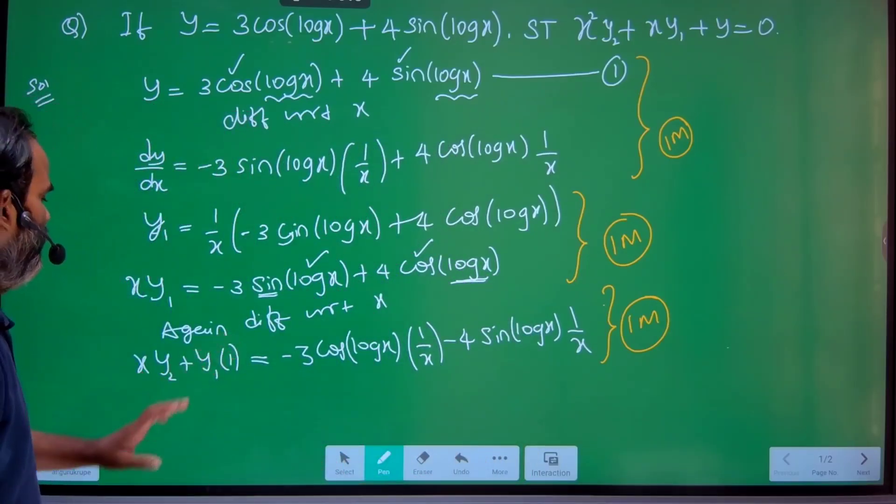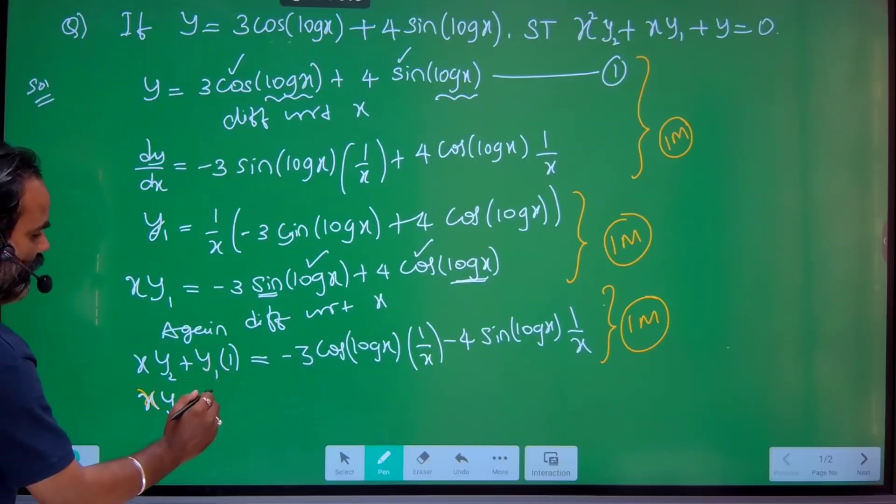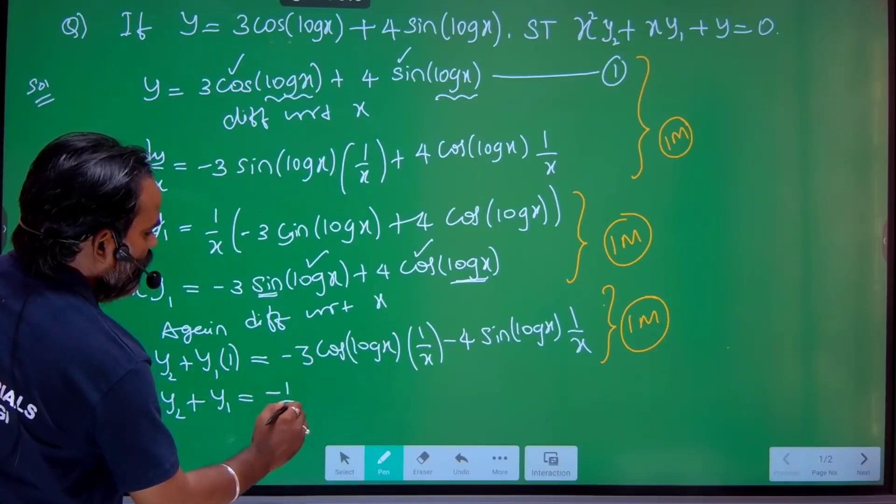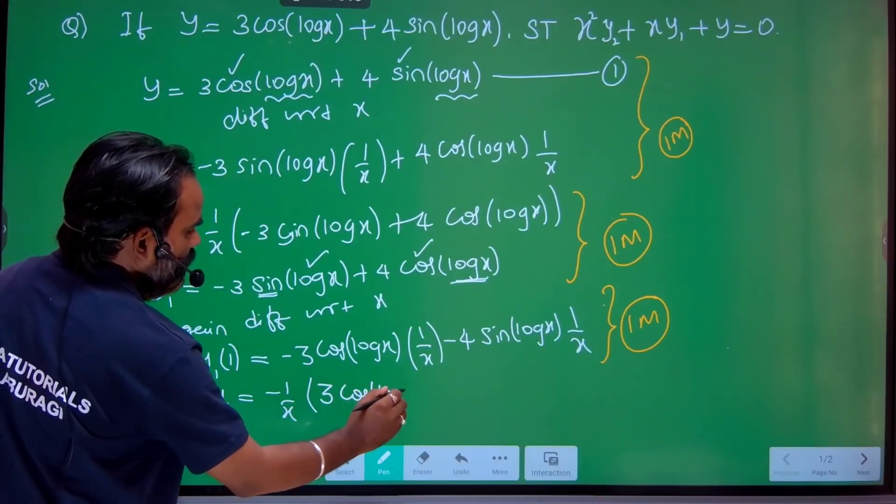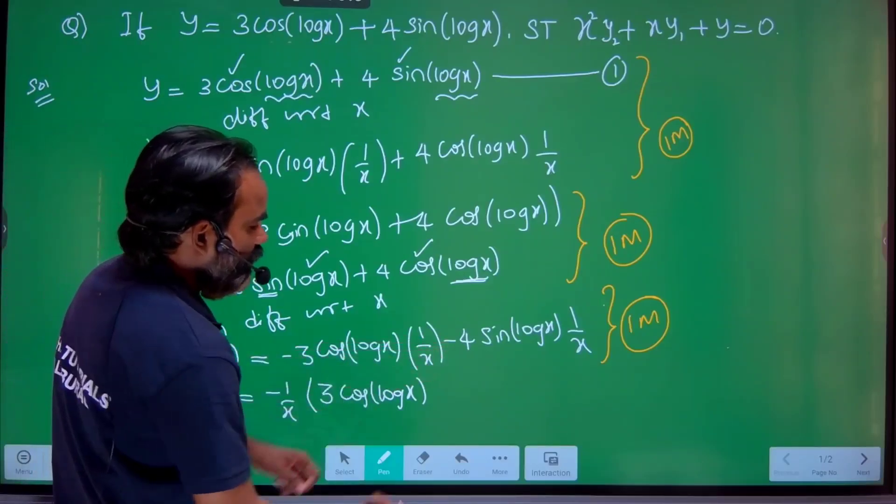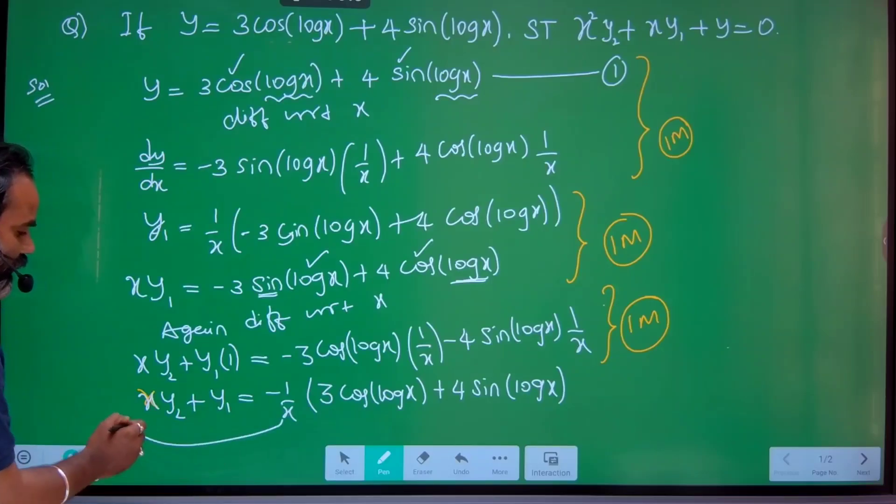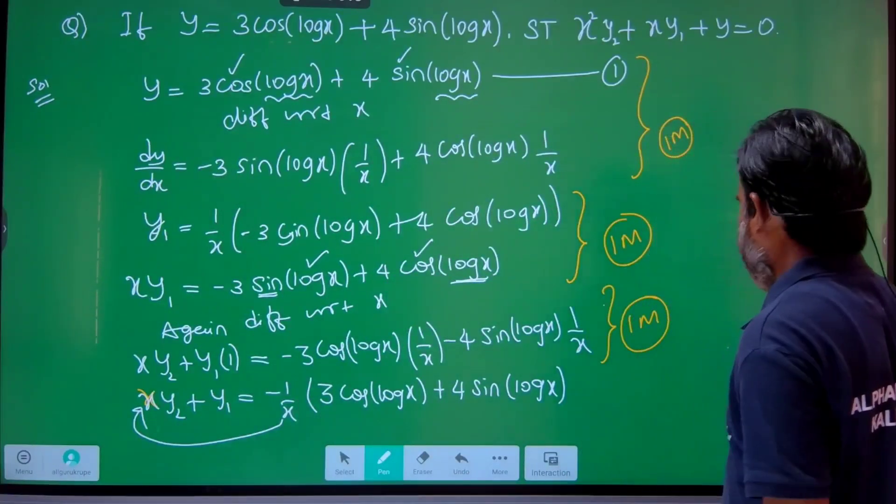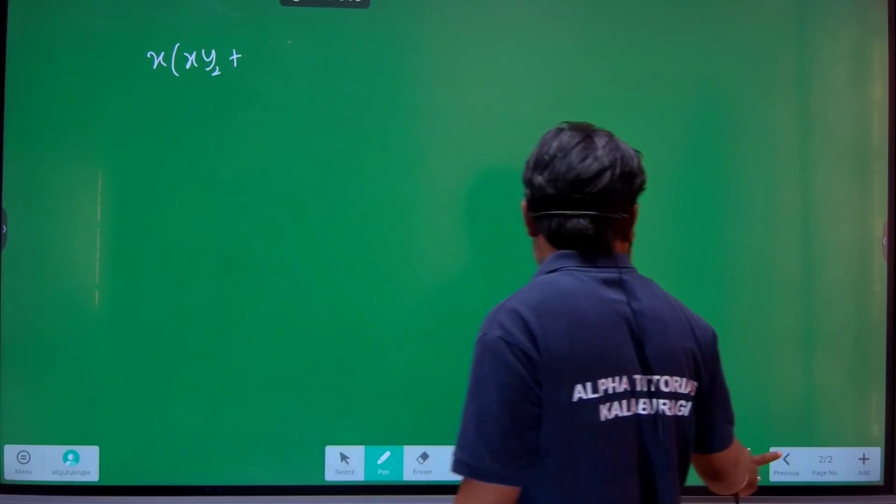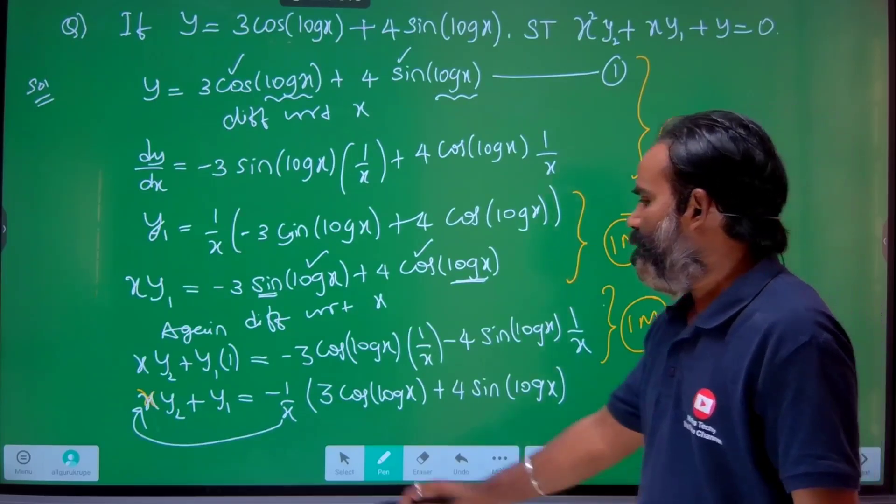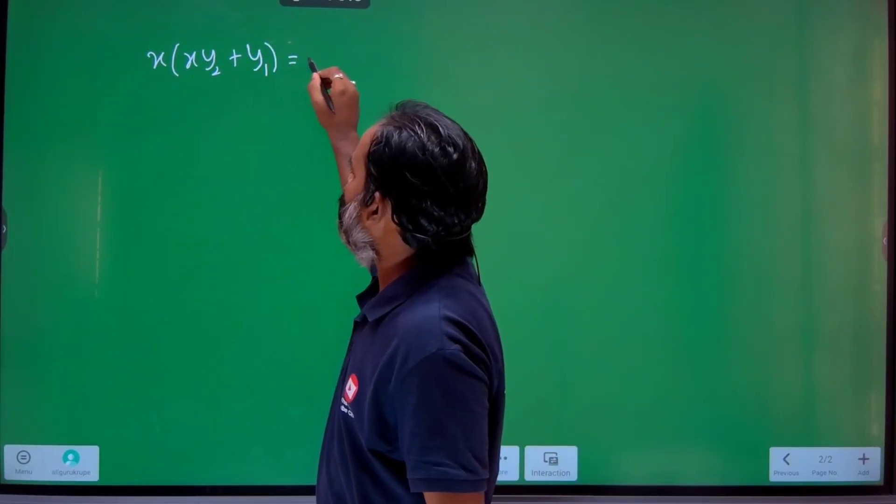Take out the common here: xy₂ + y₁ = -(1/x)[3cos(logx) + 4sin(logx)]. Take 1/x common - this will become +3cos(logx). When I take minus outside, this will become +4sin(logx). Next line: xy₂ + y₁ = -y, just as it is.